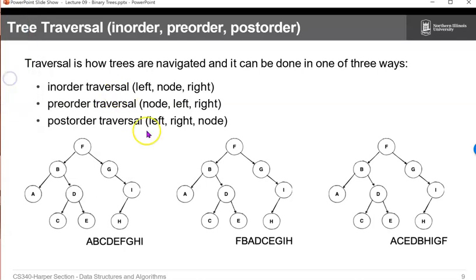Then we have a preorder traversal, which starts at the node first, then the left node and the right. I'll make this clear as we go. And then the postorder traversal, which is left, right, and node.